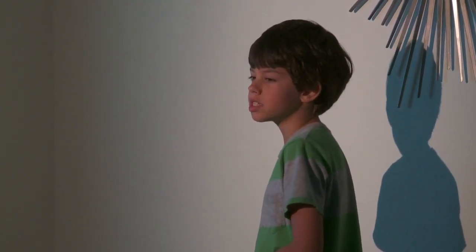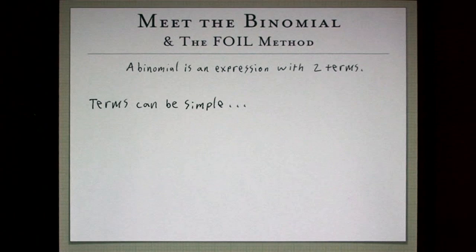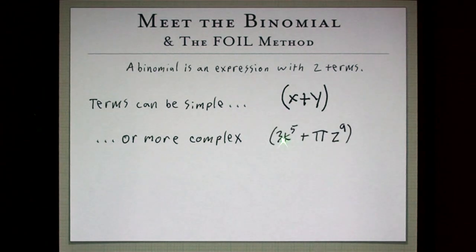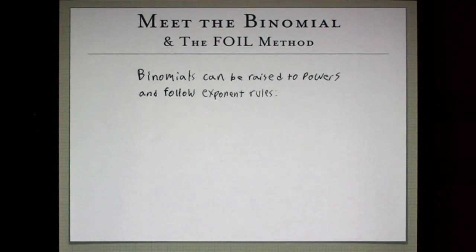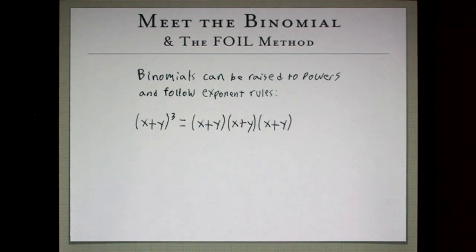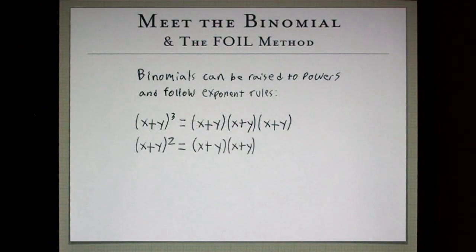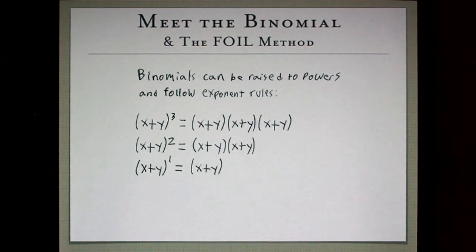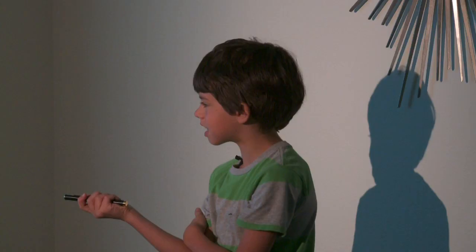Next, I'm going to talk about binomials and the FOIL method. A binomial is an expression with two terms. Terms can be simple, such as x plus y, or more complex, such as 3k to the fifth plus pi z to the ninth. Happy Pi Day! Binomials can be raised to powers and follow exponent rules: x plus y cubed equals x plus y times x plus y times x plus y. And of course, x plus y to the zero equals x plus y over x plus y, which equals one.